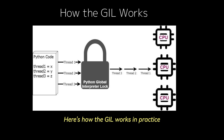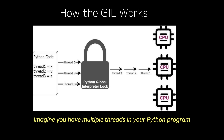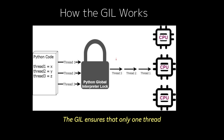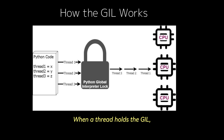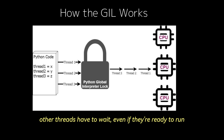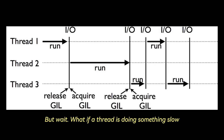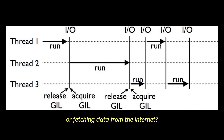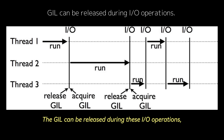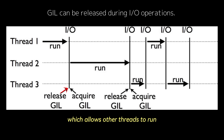Here's how the GIL works in practice. Imagine you have multiple threads in your Python program. The GIL ensures that only one thread at a time can execute Python code. When a thread holds the GIL, other threads have to wait, even if they're ready to run. But what if a thread is doing something slow, like waiting for a file to load or fetching data from the internet? The GIL can be released during these IO operations, which allows other threads to run.